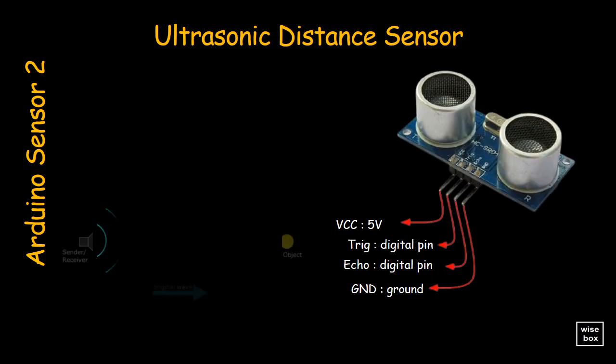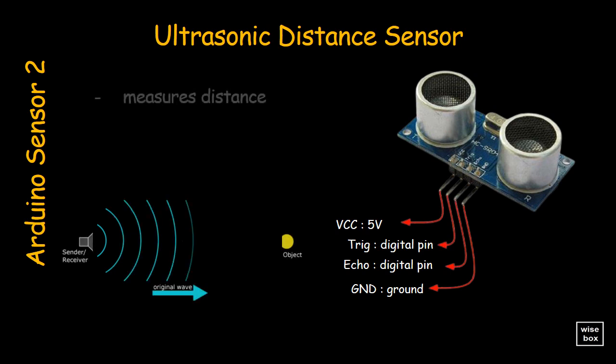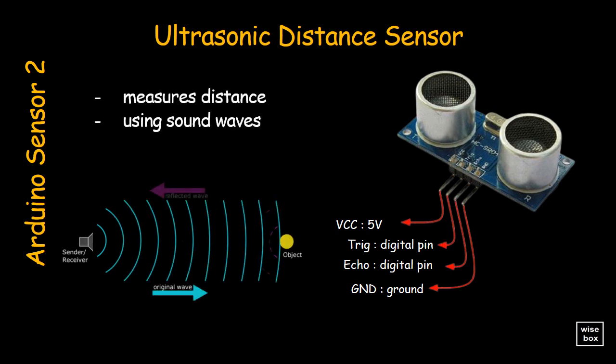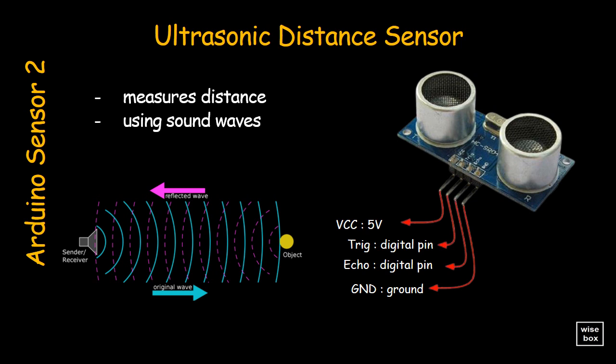Ultrasonic sensor. This sensor measures distance using sound waves, which bounce back to the sensor. The distance sensor emits short bursts of sound and listens for this sound to echo off of nearby objects.